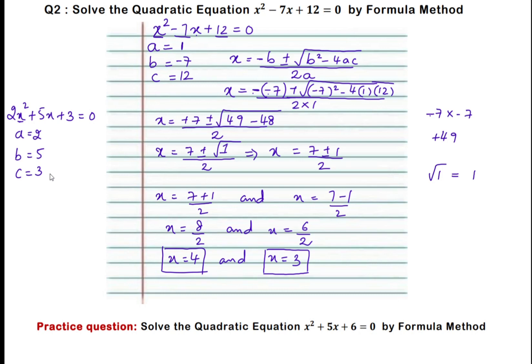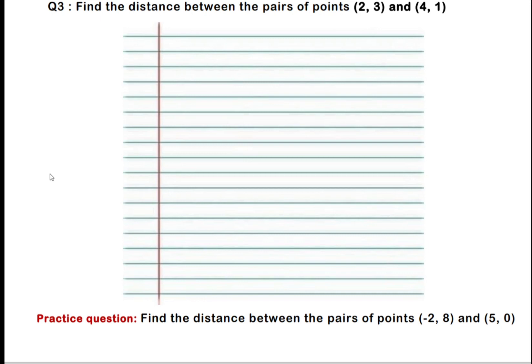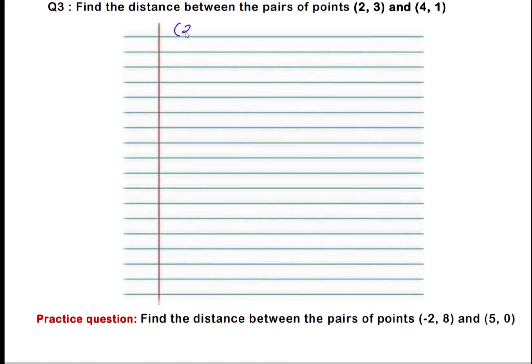We will solve question number 3: finding the distance between the pair of points (2, 3) and (4, 1). The questions we are discussing in this passing package are very important — do make a note in your book and practice all these questions, and solve more questions from the textbook based on the same concept. First step is write down the given points: (2, 3) and (4, 1).